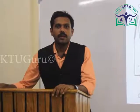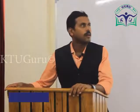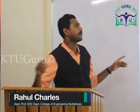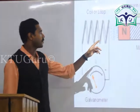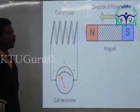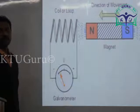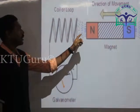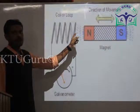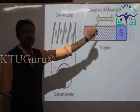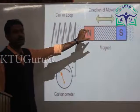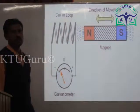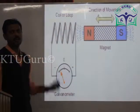Next we move on to the next topic: electromagnetic induction. Here I'm considering a bar magnet and a coil. This coil is connected to a galvanometer. The bar magnet's magnetic flux lines start from the north pole and terminate at the south pole. Whenever this magnet is moved towards the coil or taken back from the coil, there is a flux linkage in this conductor or coil.